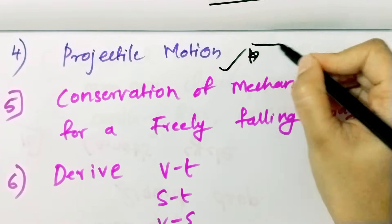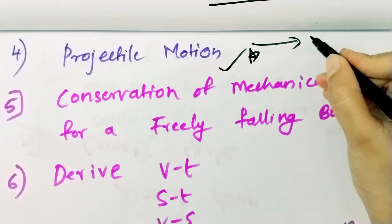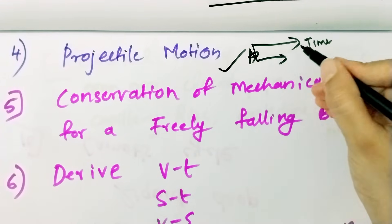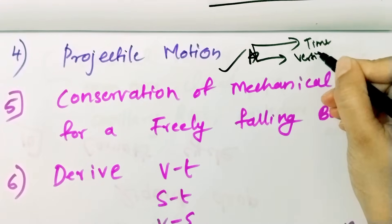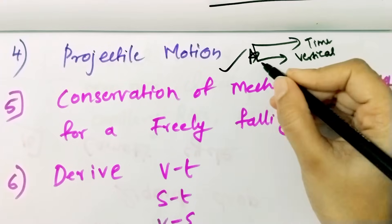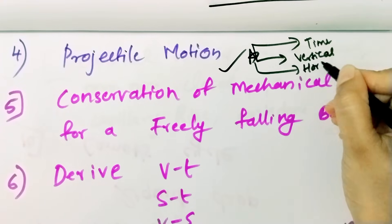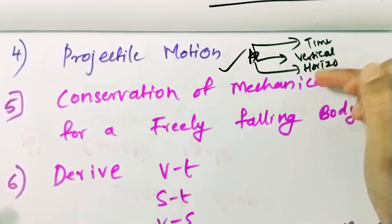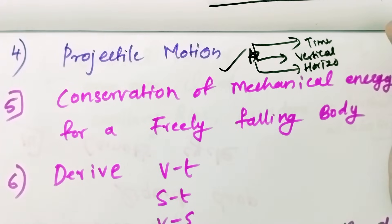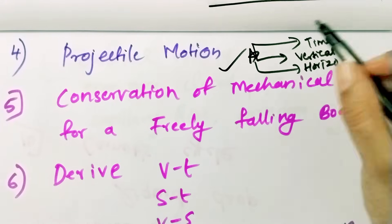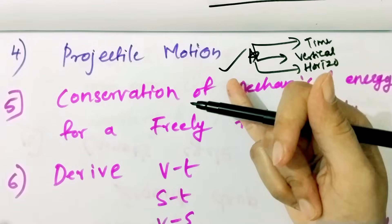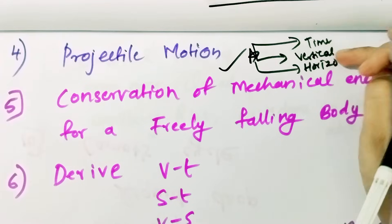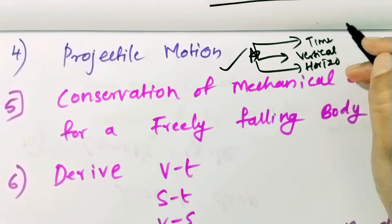Let's see the projectile motion. We will derive: Time of Flight of Projectile Motion, Vertical Height, and Horizontal Range — three sections. Let's check the three sections. What is projectile motion? One mark question: what is the name of the path? Then the derivations.